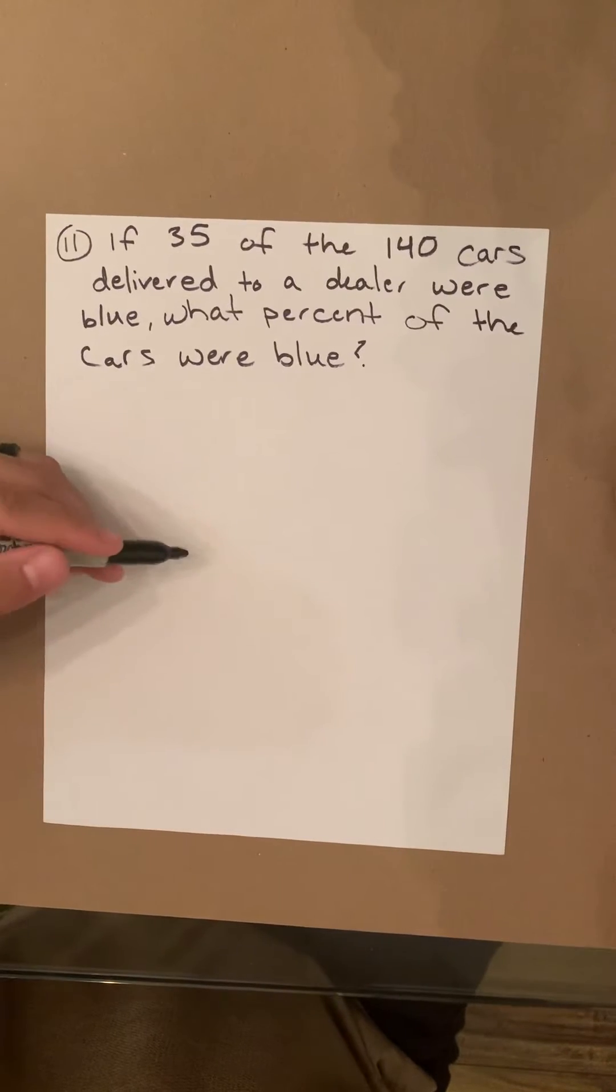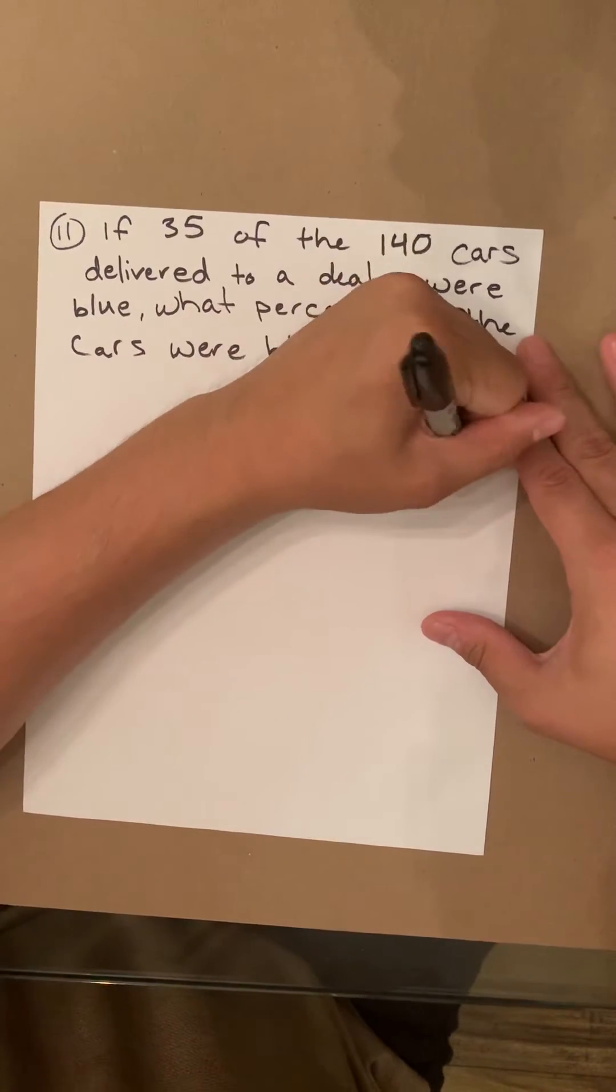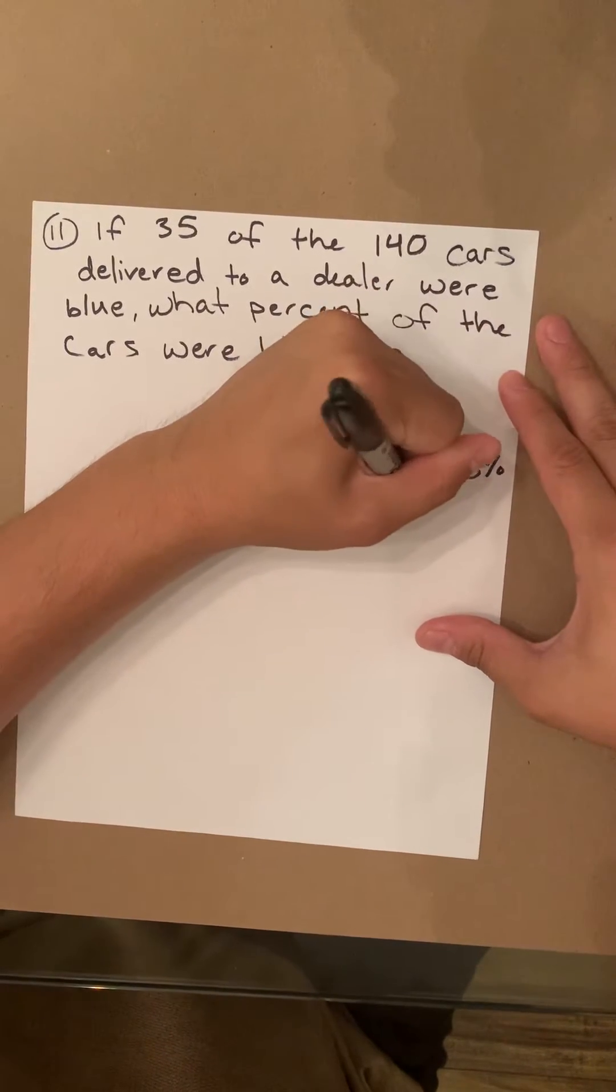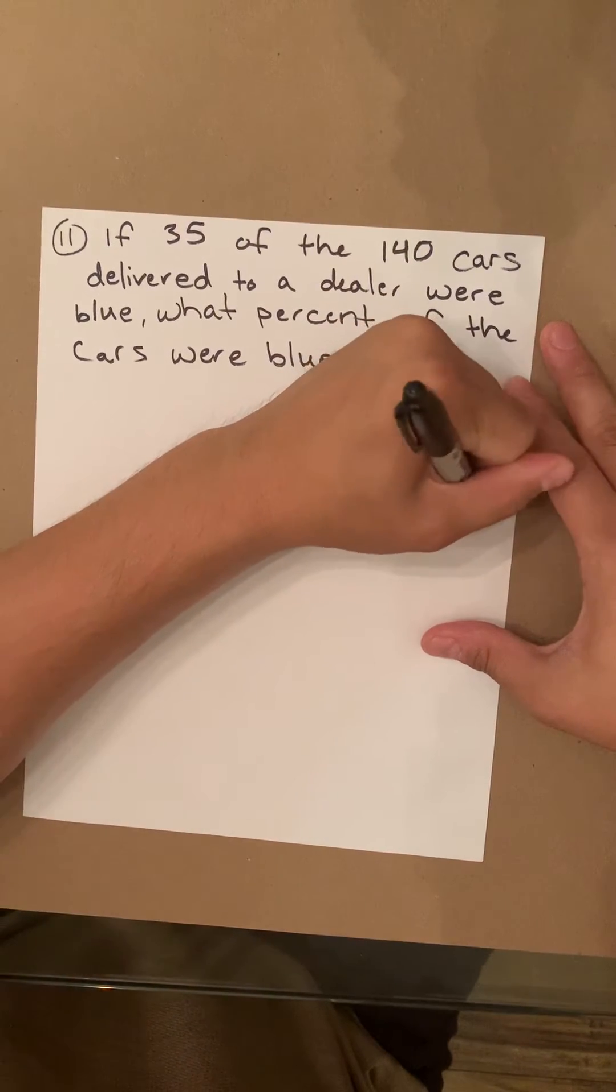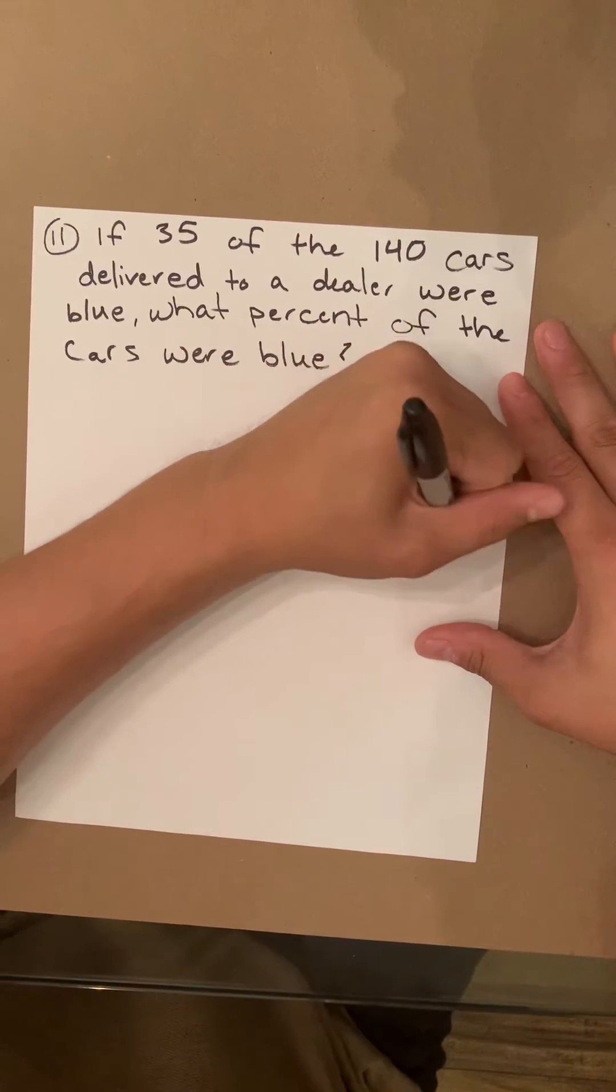Once again, I want to reiterate my little quick trick: if it can divide into itself four times, that's 25 percent. Can divide into itself five times, that's 20 percent. If it can divide into itself 10 times, that's 10 percent.